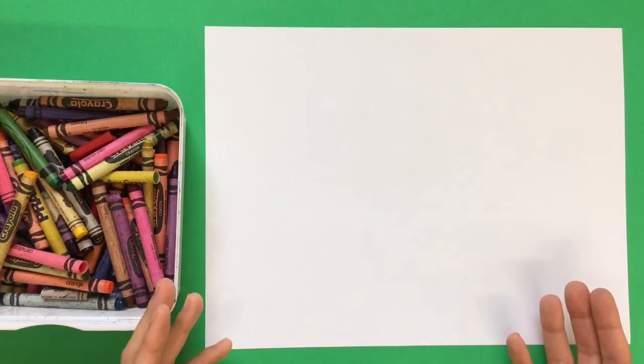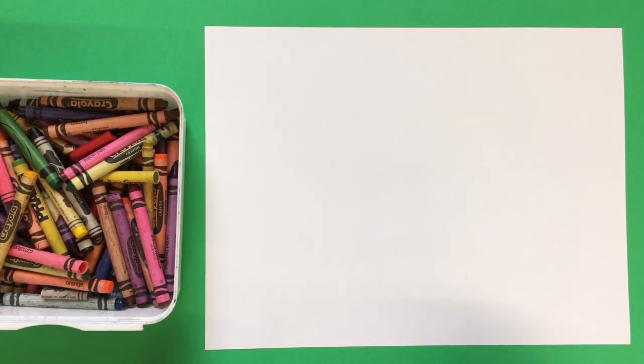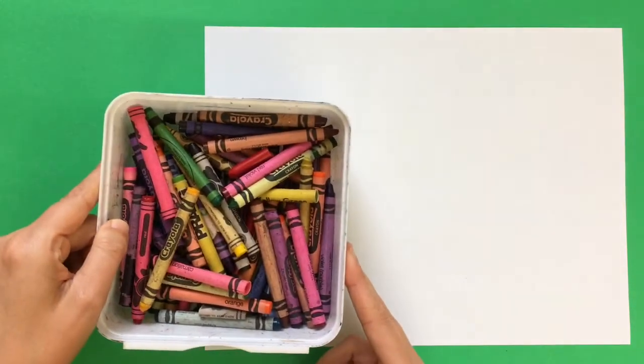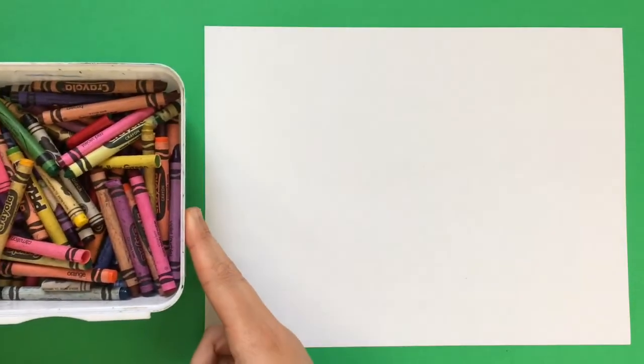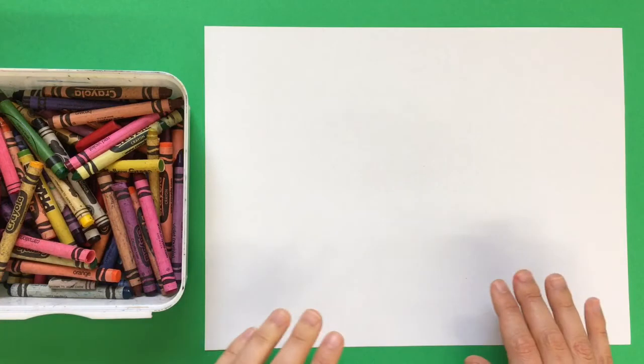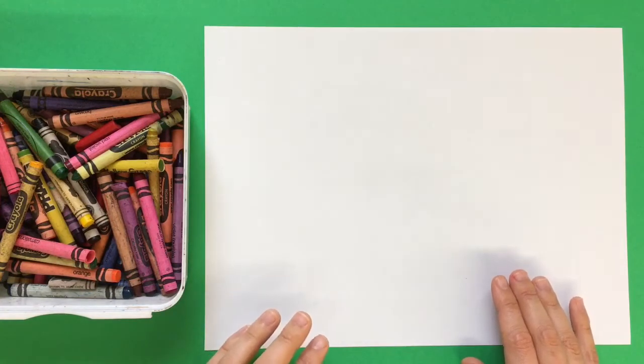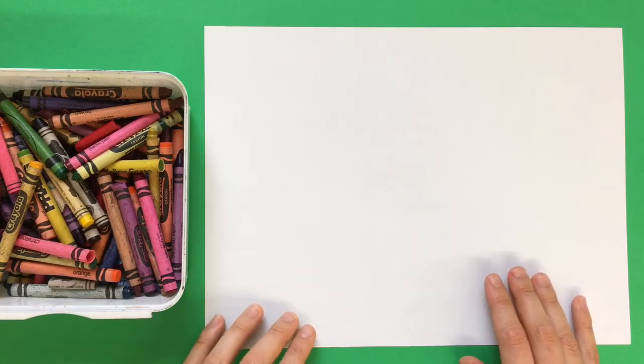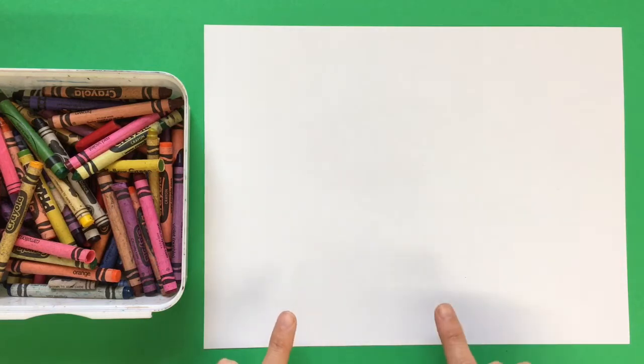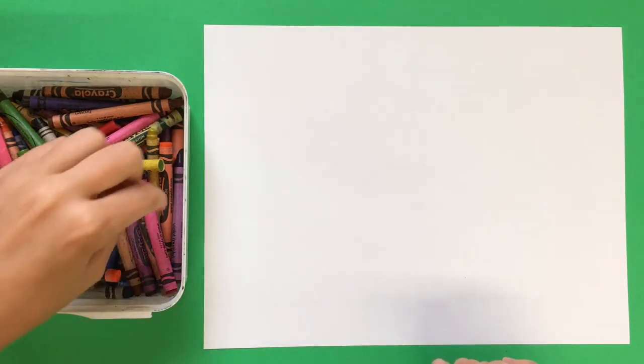Today we're going to be playing a drawing game inspired by Kandinsky's artwork. You are going to be using crayons and you are going to draw shapes and lines based on the prompts that your teacher gives you. I'm going to do a few quick examples so you kind of get the idea of how this game works.